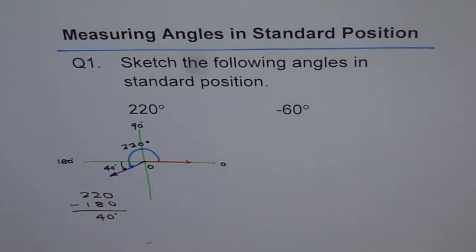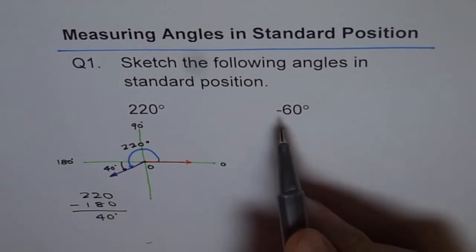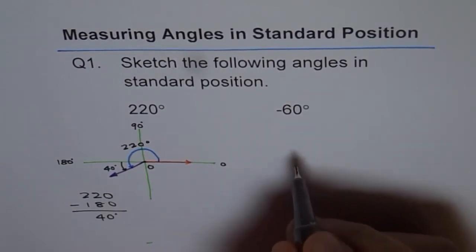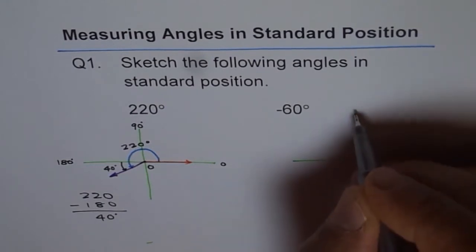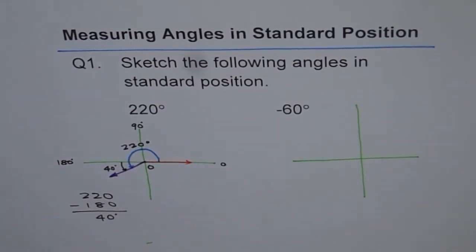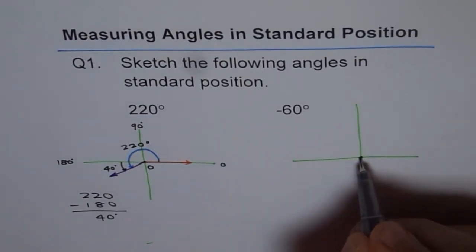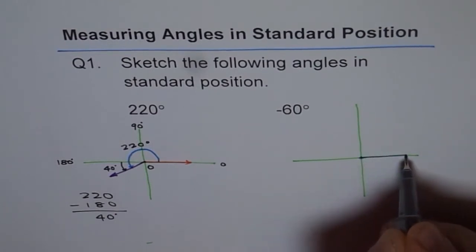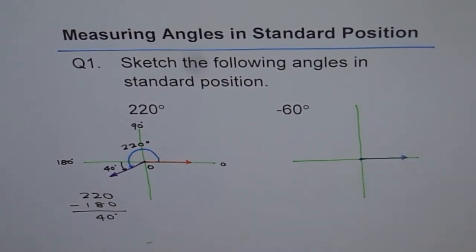Now let's look into the next one which is minus 60 degrees in standard position. That means we will make our coordinate plane and we get the origin first. Now let's sketch the initial arm first. This will be my initial arm. It has to be along the positive x-axis.